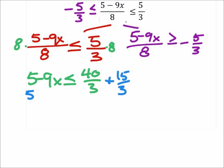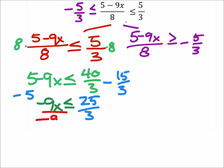It's minus 15/3, and I still have that negative 9x less than or equal to... I've got common denominators there, so that's not a big deal. That would give us 25/3. And then finally, we would divide both sides by negative 9.